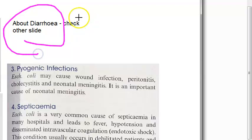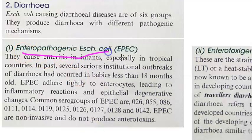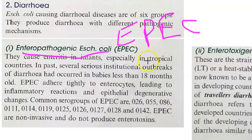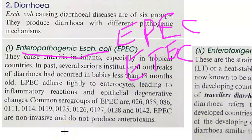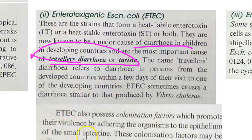E. coli also causes diarrhea. Enteropathogenic E. coli (EPEC) is a major cause in infants. Enterotoxigenic E. coli (ETEC) is a major cause in children in developing countries and is responsible for travelers' diarrhea, also called turista. Enteroinvasive E. coli (EIEC) invades the intestinal epithelium.